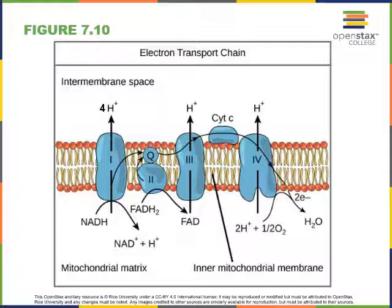As electrons move from NADH to ubiquinone forming ubiquinol, these electrons are moving from a high energy state to a lower energy state. The energy released in that process is used by complex 1 in order to pump hydrogen ions out of the mitochondrial matrix.